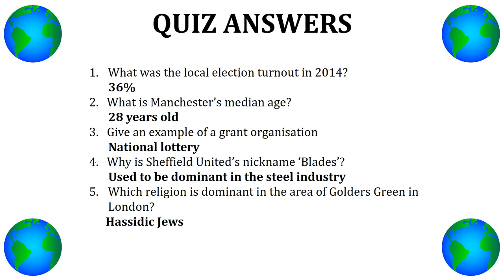Quiz answers: The local election turnout in 2014 was 36%. Manchester's median age is 28 years old. An example of a grant organization is the National Lottery. Sheffield United are nicknamed the Blades because the city used to be dominant in the steel industry. The religion dominant in Golders Green, North London, is Hasidic Judaism. This was part of inquiry question two for regeneration for the Edexcel AS specification. Thanks for watching — email or comment below with any recommendations.